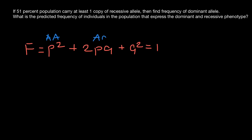For 2PQ, it's going to be the heterozygous genotype with one dominant and one recessive allele. And for Q squared, it's going to be the homozygous recessive genotype. These three genotypes are made by two alleles P and Q, so if we combine them, the frequency equals one, or 100%.